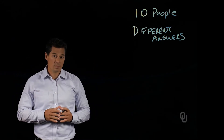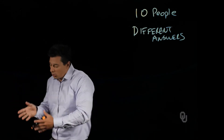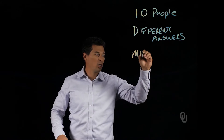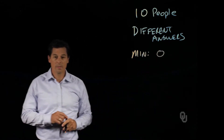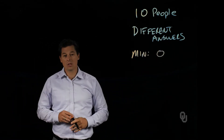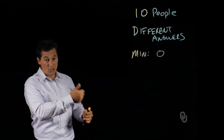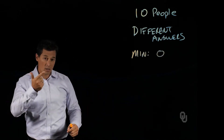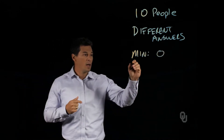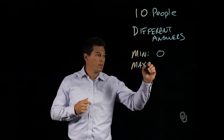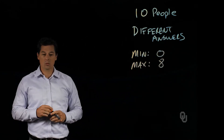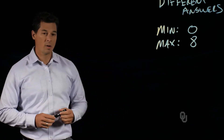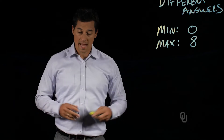What are these possible answers? If you're anti-social, you don't have to shake anyone's hand, so the minimum number of handshakes is zero. The maximum number is eight, because you can't shake your own hand and you can't shake your spouse's hand, leaving eight other people.